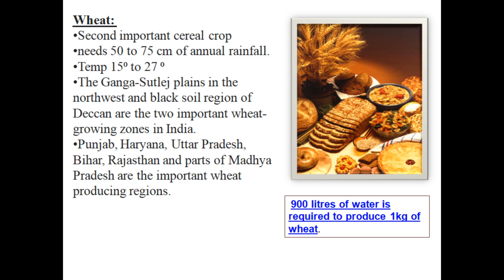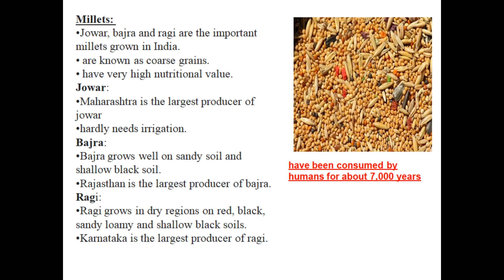Next we have millets — these are called super food. Humans have been eating millets for more than 7,000 years. When wheat and rice were not available, millets were the only resource. They are also called coarse grains or 'mota anaj.' They require less water than wheat or rice and have high nutritional value — much higher nutrition compared to wheat and rice.